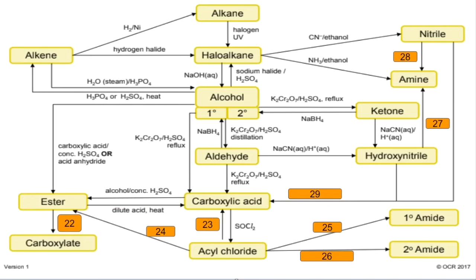Number twenty-two: another hydrolysis reaction, but this time to get the carboxylate salt you would use aqueous hydroxide ions and again you would need to heat it. Number twenty-three: acyl chloride to carboxylic acid — react it with water. Number twenty-four: acyl chloride to ester — react with an alcohol. Number twenty-five: acyl chloride to primary amide — react with ammonia. Number twenty-six: acyl chloride to secondary amide — react it with a primary amine.